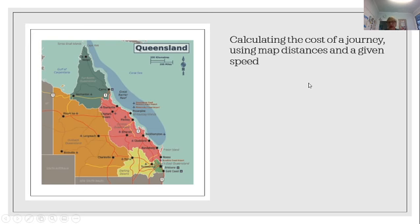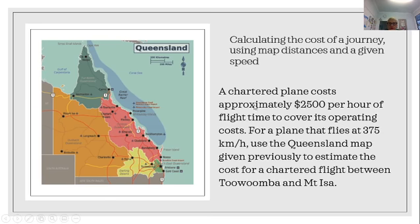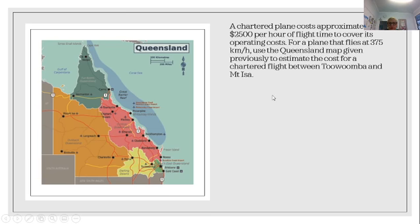Now we're calculating the cost of the journey using map distances and the given speed. A chartered plane costs approximately two and a half thousand dollars per hour of flight time to cover its operating costs. For a plane that flies at 370 kilometers an hour, use the map used previously to estimate the cost of the flight between Toowoomba and Mount Isaac.